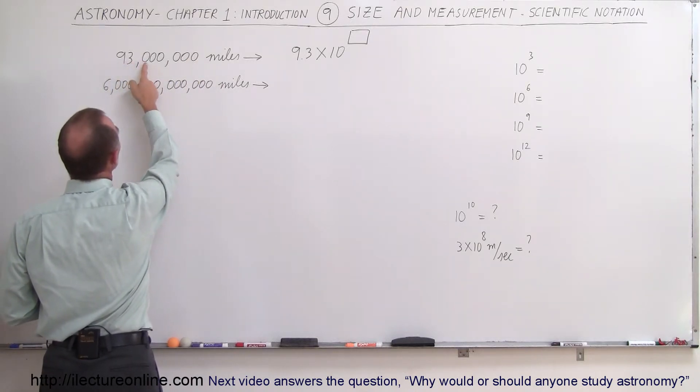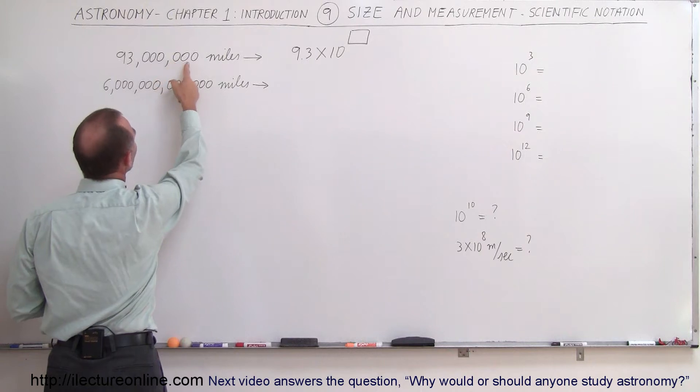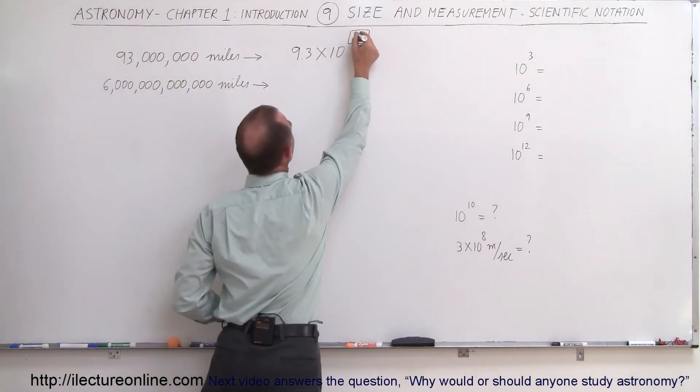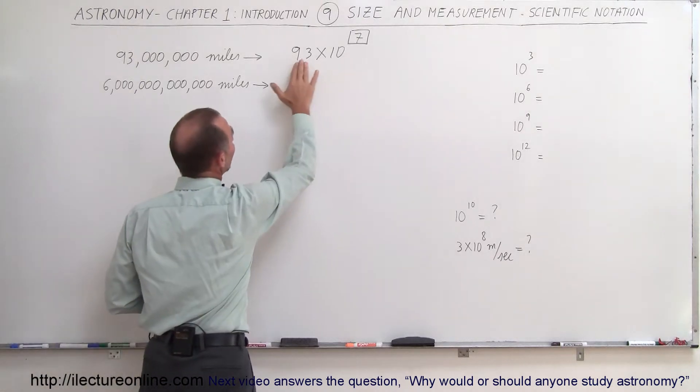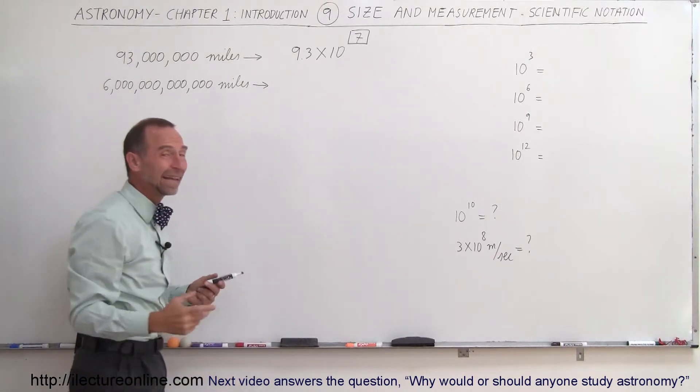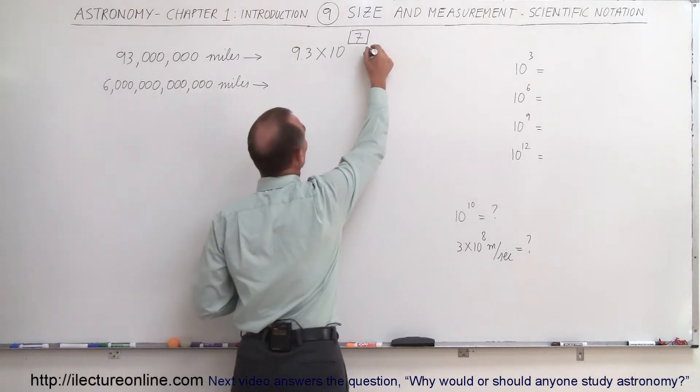So we start from here, we see 1, 2, 3, 4, 5, 6, 7, so we write 10 to the 7th. 10 to the 7th is 10 million, and 10 million times 9.3 is 93 million, and that's how we write that. So this of course would be miles.